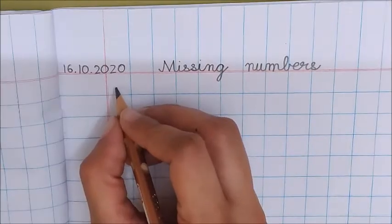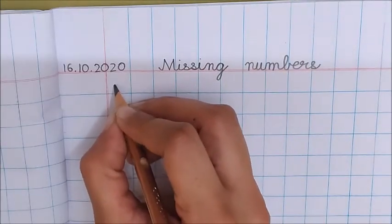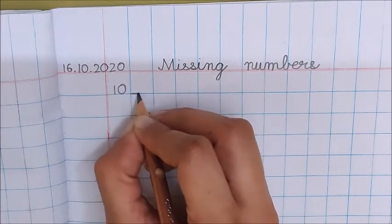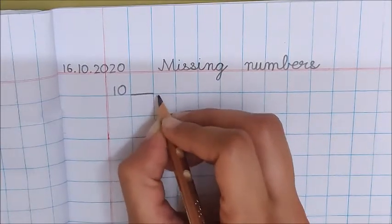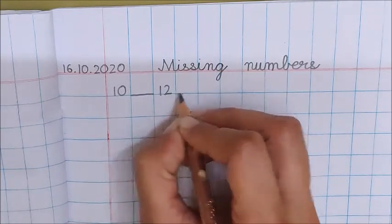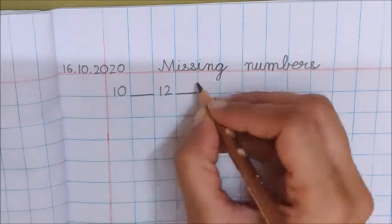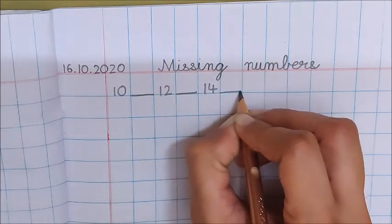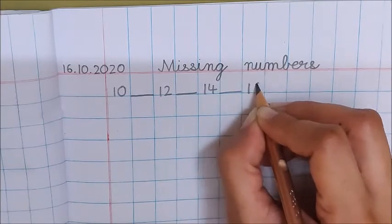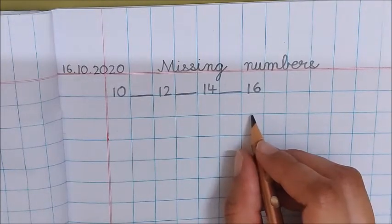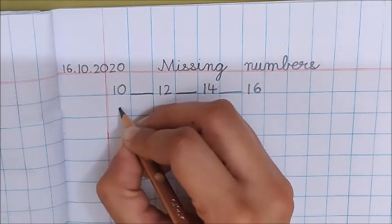Now children, in the first box write down 10, dash, 12, dash, 14, dash, 16. See, all my numbers are touching the blue line. Now below 10 put a dot.